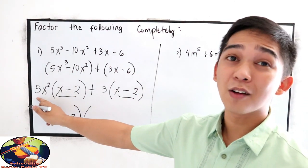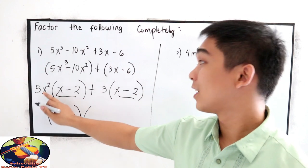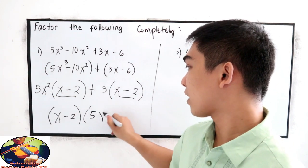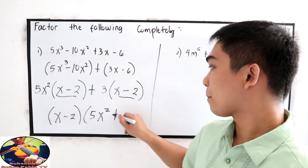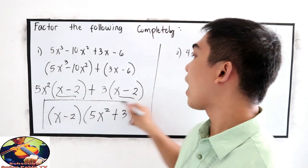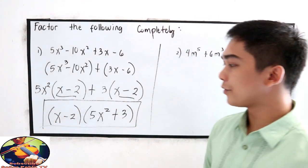Copy the expression outside the parentheses. So we have 5x squared plus 3. This is now our factored form.